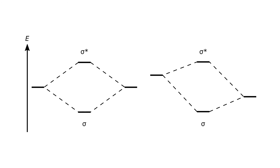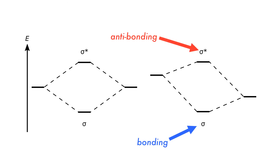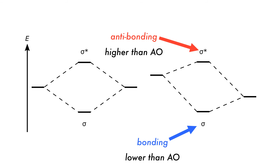When molecular orbitals combine successfully, they produce a bonding and an antibonding orbital. The bonding orbital is lower in energy than the atomic orbitals and is stabilizing, whereas the antibonding orbital is higher in energy and destabilizing.